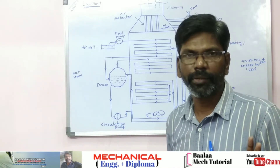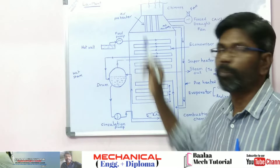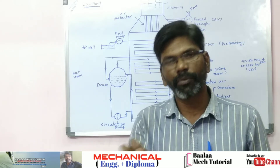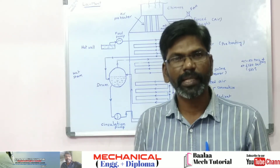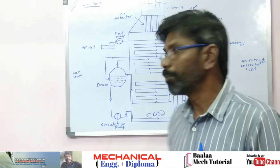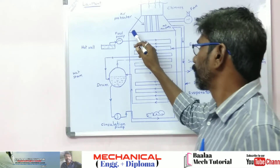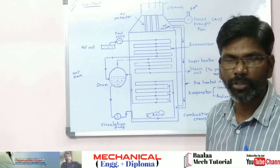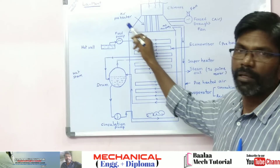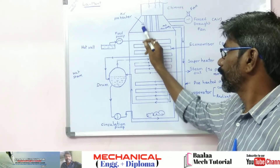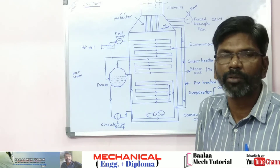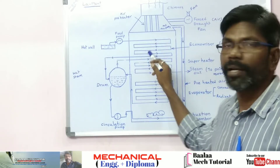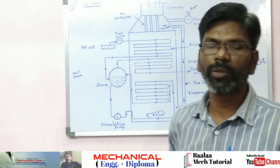So first, here is the economizer. Second one is the air preheater. Here is the air preheater. The hot area includes the economizer, whose main function is the free heating process — pre-heating the feed water.